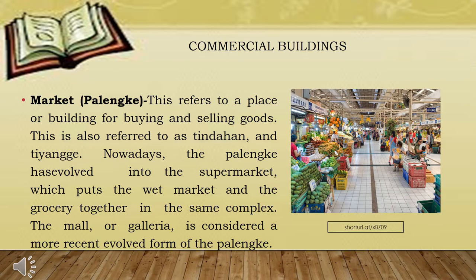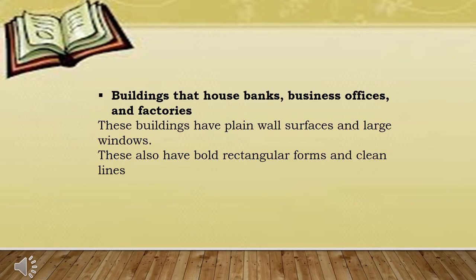Commercial buildings. First is the market or palengke. This refers to a place or building for buying and selling goods. This is also referred to as tindahan and changge. Nowadays, the palengke has evolved into supermarkets, which put the wet market and the grocery together in the same complex. The mall or galeria is considered a more recent evolved form of the palengke. Buildings that house banks, business offices, and factories have plain wall surfaces, large windows, bold rectangular forms, and clean lines.